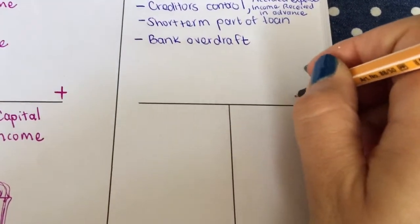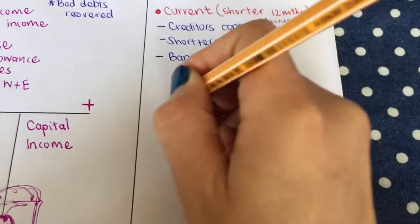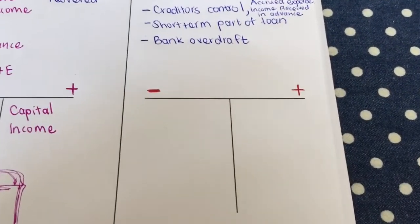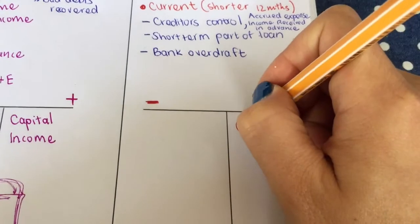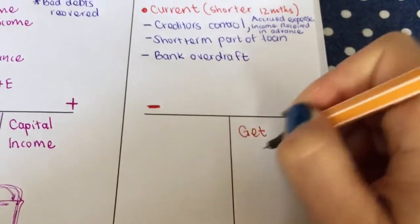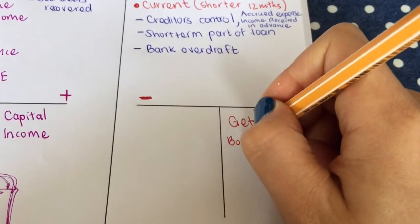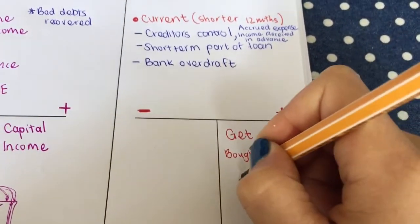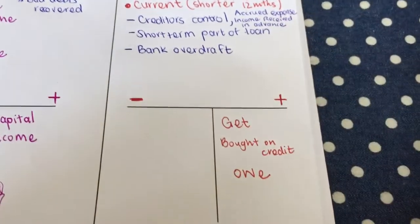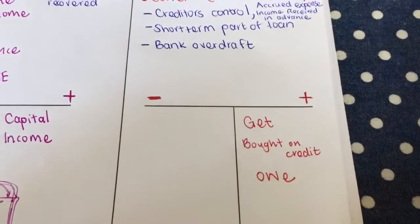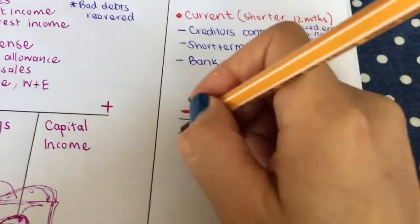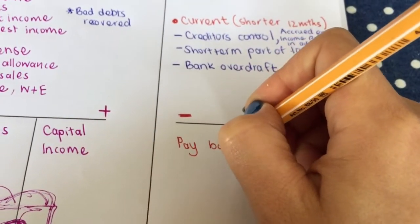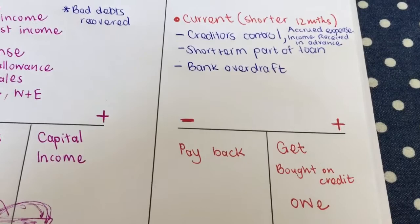Then if we go to my little T, liabilities will increase on the credit side and decrease on the debit side. When I get a liability, which means you either bought on credit or you owe something and you owe more, then it will increase your liabilities. The moment you pay back what you owe, it will decrease your liability.